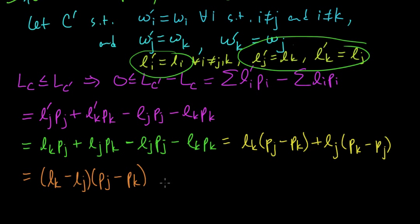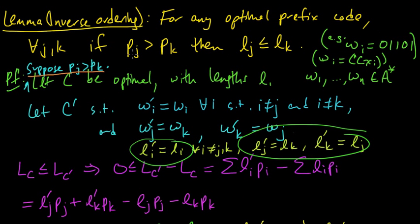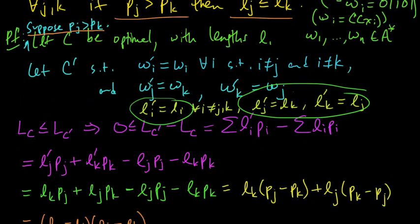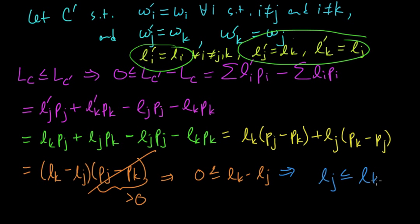And what is this? This is pj minus pk. And by our supposition, pj is greater than pk. That's what we assumed. That's what we're trying to prove. We have some optimal prefix code, and if pj is greater than pk, then lj is less than or equal to lk. So that's what we're trying to show. We assume this, and we'd like to say that lj is less than or equal to lk. And is it? Well, what can we do here? This is a positive quantity since pj is greater than pk. And so we can just cancel it. So this whole thing is greater than or equal to zero, and this is a non-zero quantity. So we can just cancel that. So we get zero less than or equal to lk minus lj, or in other words, lj less than or equal to lk.